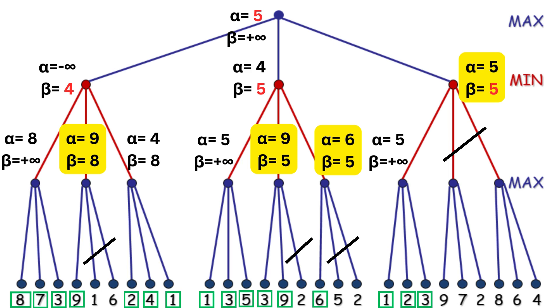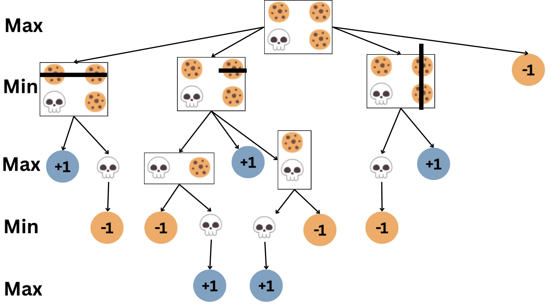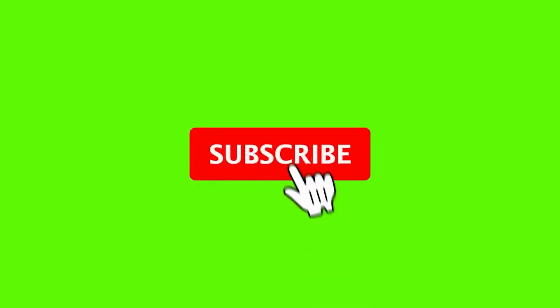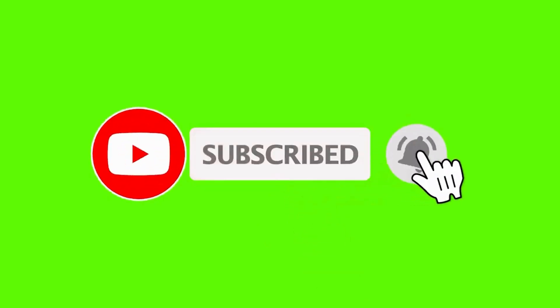Now it's time for your task. In the last video we built a min-max tree and you were supposed to apply the min-max algorithm on it. Now your task is to apply alpha-beta pruning on the same tree. If you found this video helpful, don't forget to like, share, and subscribe for more videos on data science and AI. See you next time.